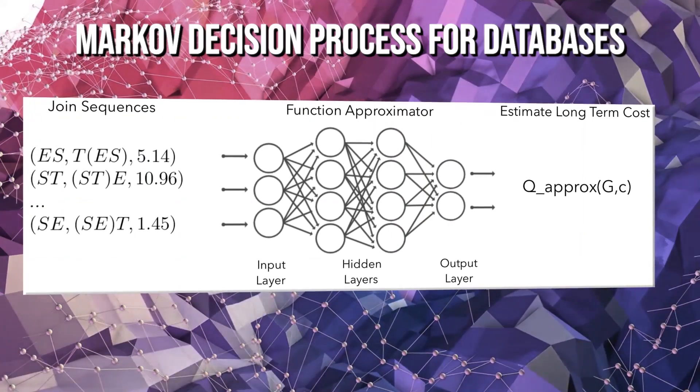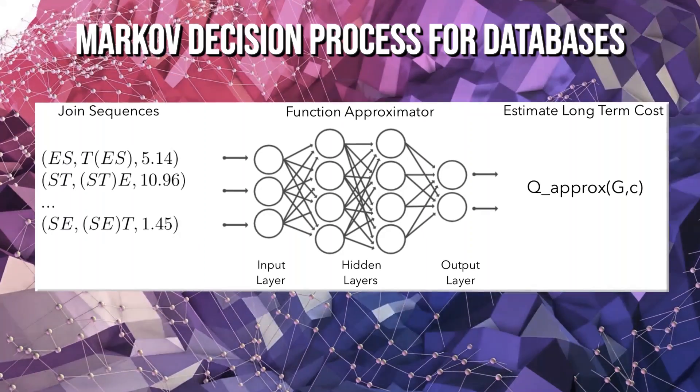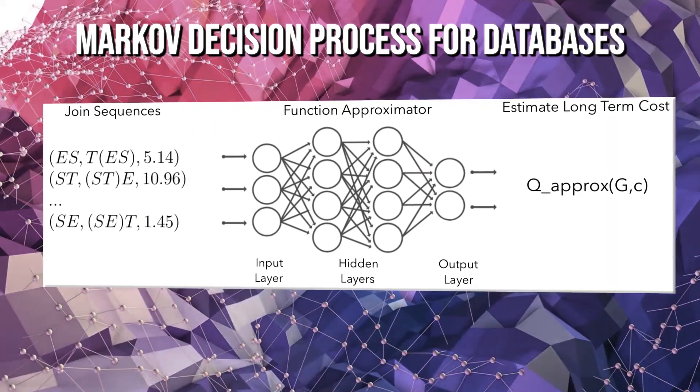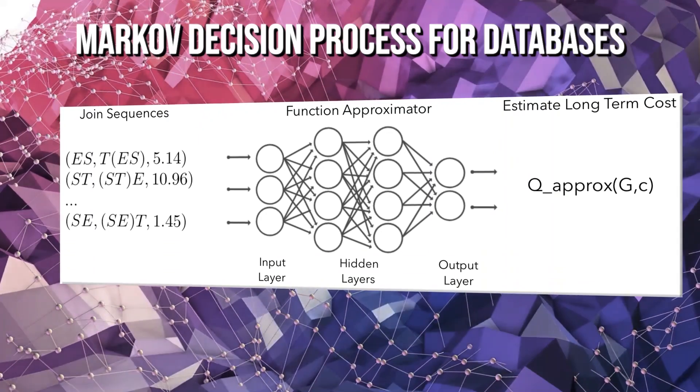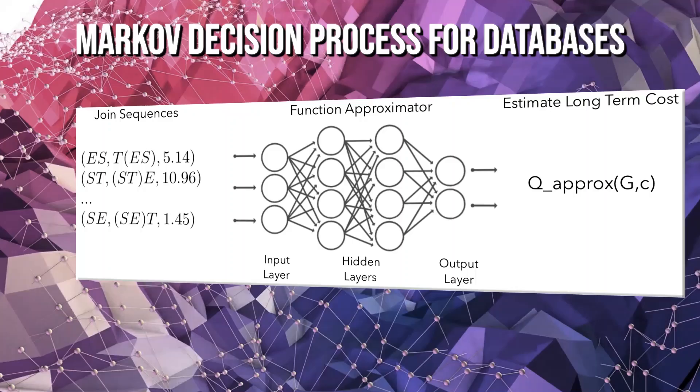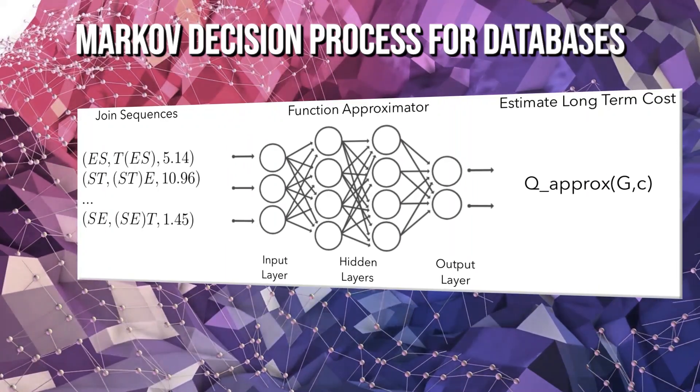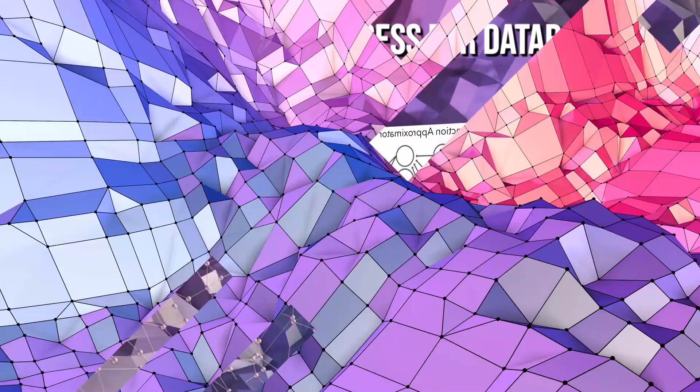This Q learning algorithm has a computational complexity of n cubed. Although that's high, it's still much lower than the exponential runtime complexity of dynamic programming. In reality, though, we don't have access to the optimal Q function, so we need to approximate it. To do that, we can use a neural network, which would make this deep Q learning.